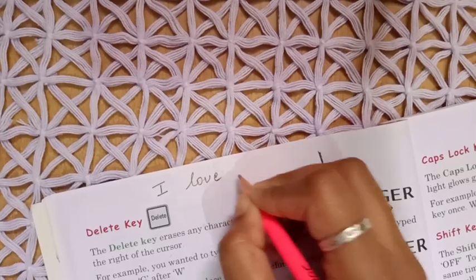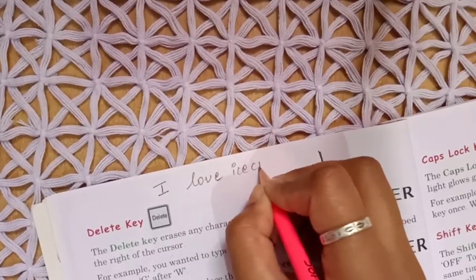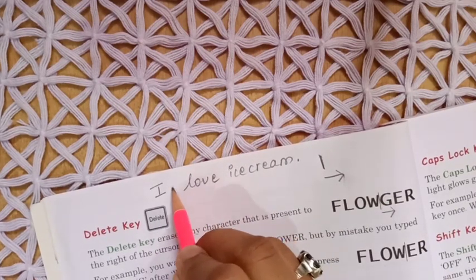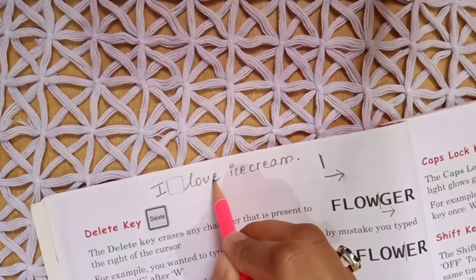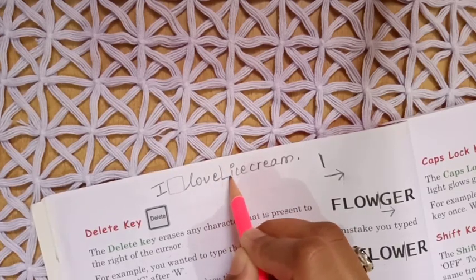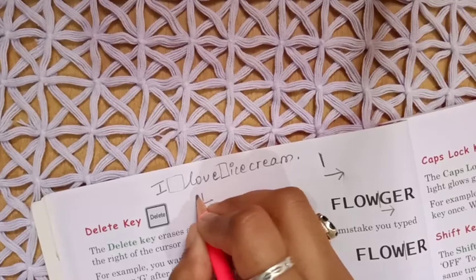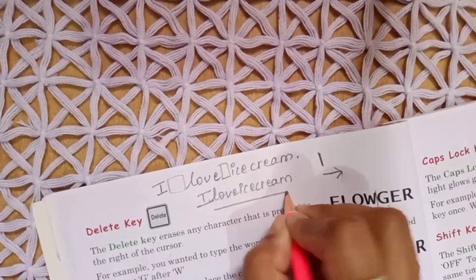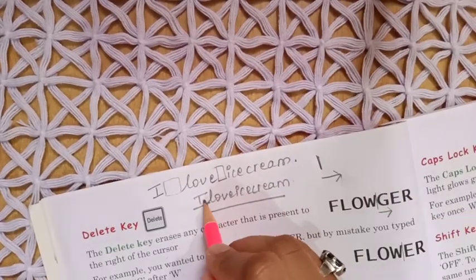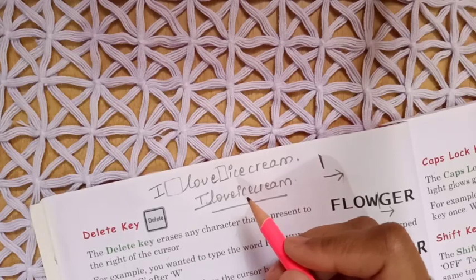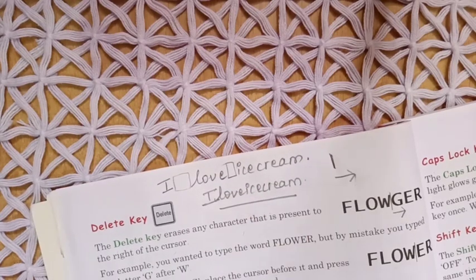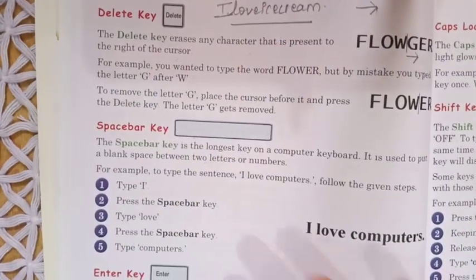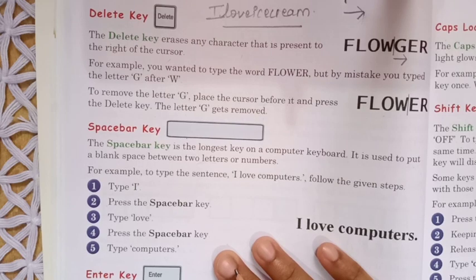For example, the sentence 'I love ice cream' — between 'I' and 'love' there is a blank space, and between 'love' and 'ice cream' there is also a blank space. If we type it without spaces, like 'Iloveicecream', nothing can be understood. So giving space between letters is very important, and the space bar key helps us do that when typing.